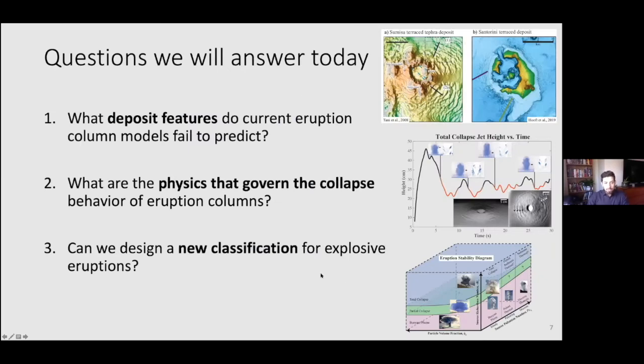Here are the research questions. First, what deposit features do current eruption column models fail to predict? When we have an eruption, does that hot mixture collapse or spread in the atmosphere? These lead to different deposit features. Second, what are the physics in the eruption column that govern collapse, how does collapse behave once it starts, and how does it evolve throughout the eruption? Finally, can we design a new classification for explosive eruptions that is more inclusive, predictive, and useful than the standard classification?